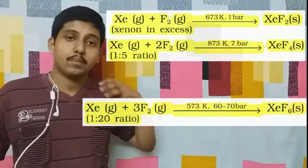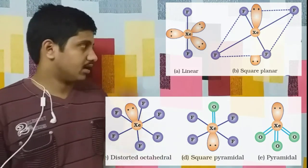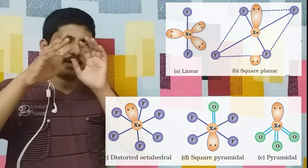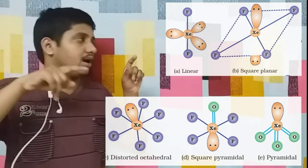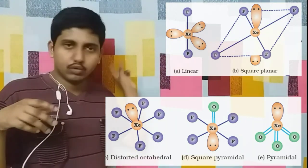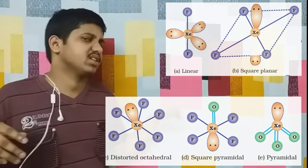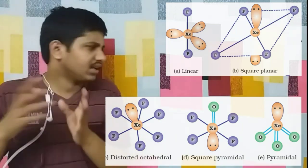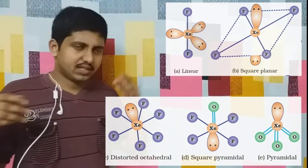Now let's go to the structures of these various fluorides. XeF2 has a linear structure with two lone pairs of electrons in the equatorial plane and the bonds in the axial plane. Other structures like XeF4 and XeF6 are also important.